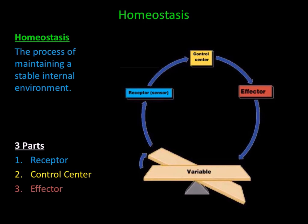Using the illustration, let's take a look at how homeostasis is maintained. A variable is a condition that can be changed or regulated, such as temperature. The variable is on a level board, which represents ideal normal values called a set point. Any changes away from the set point are called a deviation or an imbalance. When a deviation occurs and a variable is no longer in homeostasis, the body will activate mechanisms that oppose the deviation to return the body back to homeostasis.